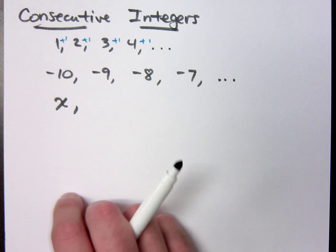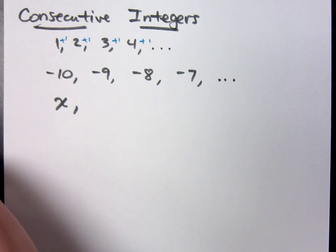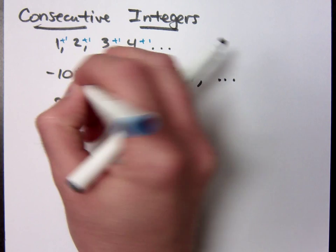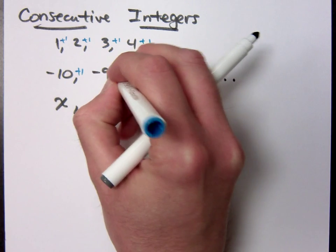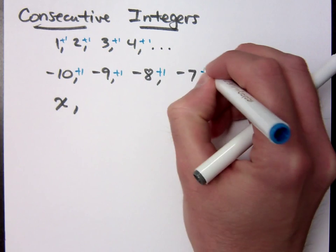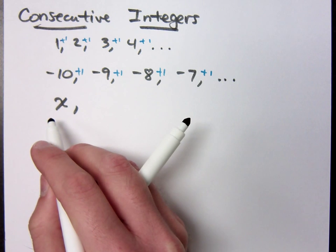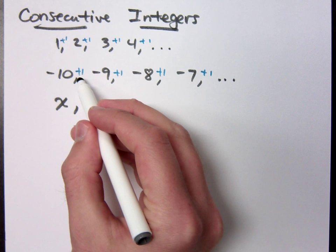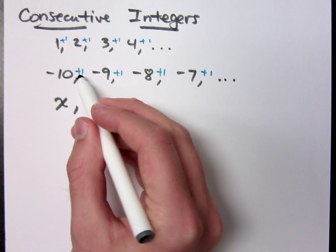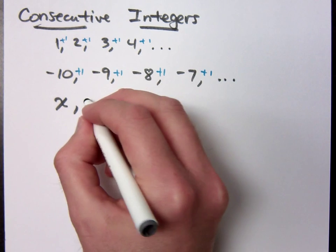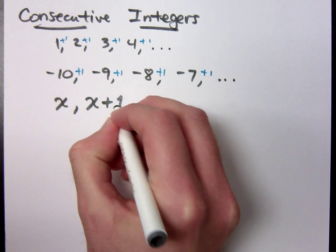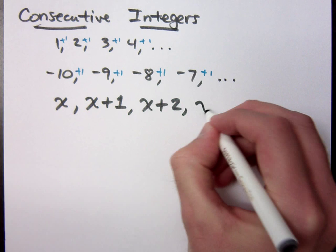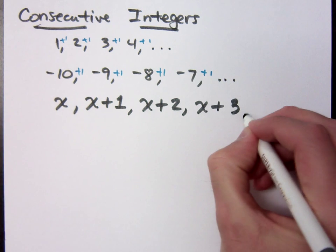So it would be x plus one. Let's try this again. How did I go from negative ten to negative nine? I added one, I added one, and so on. So if I'm starting with x, the next would be x plus one, then x plus two, and so on. You understand?